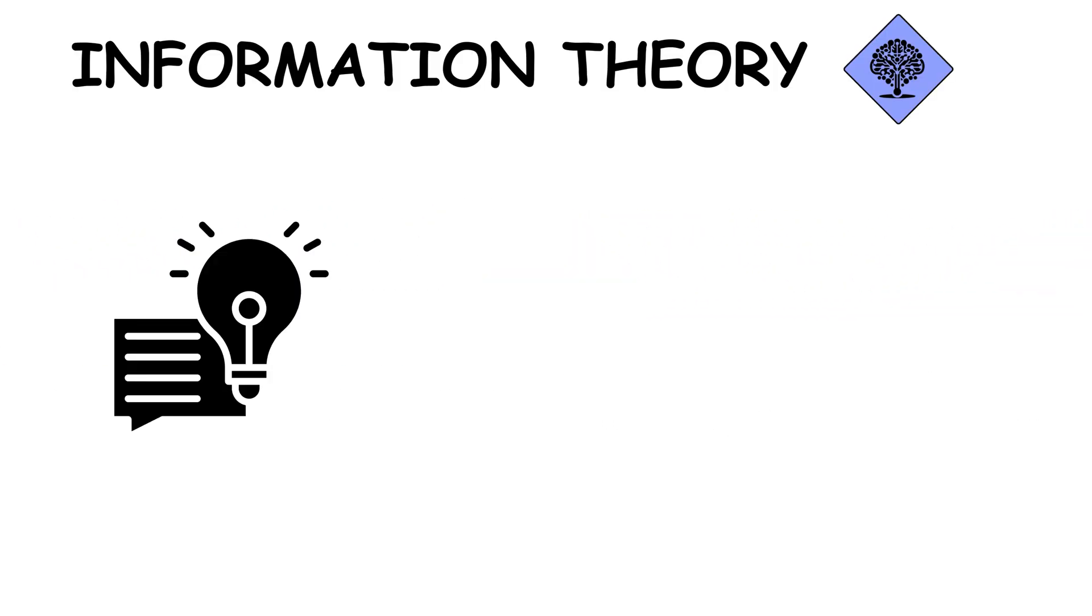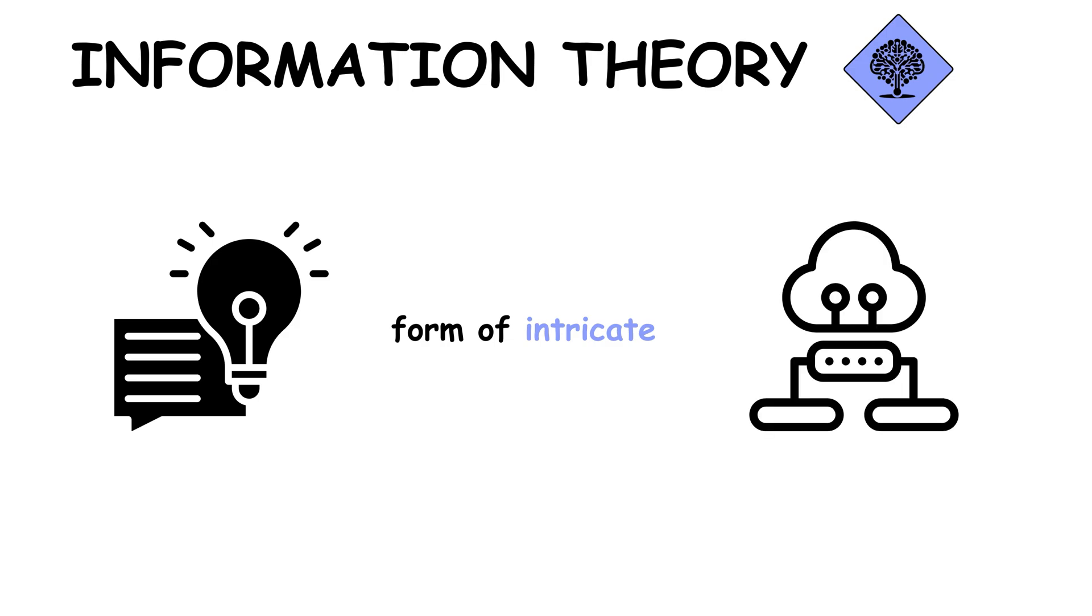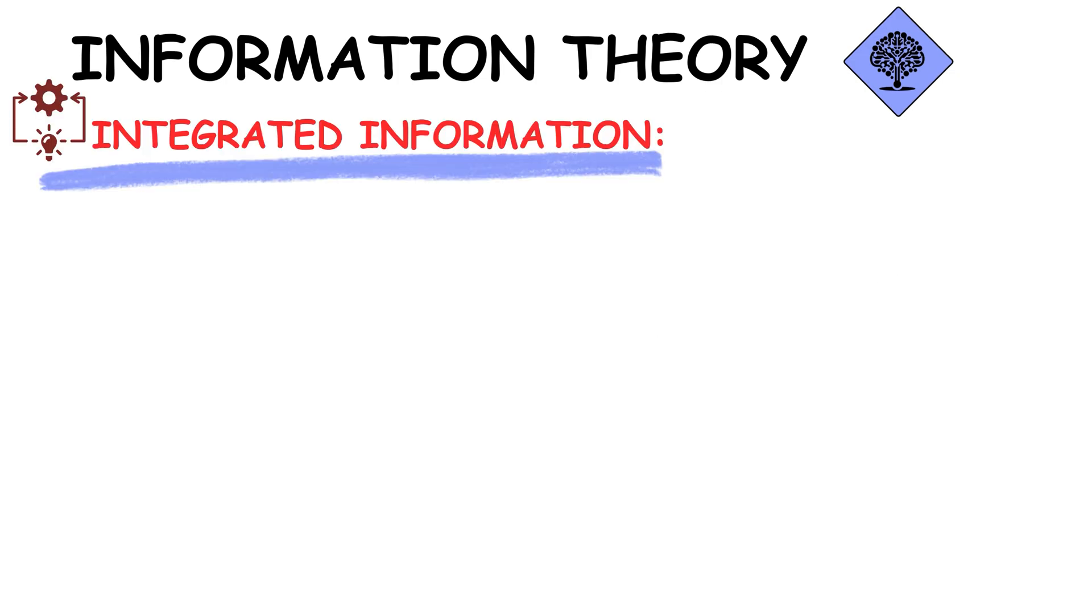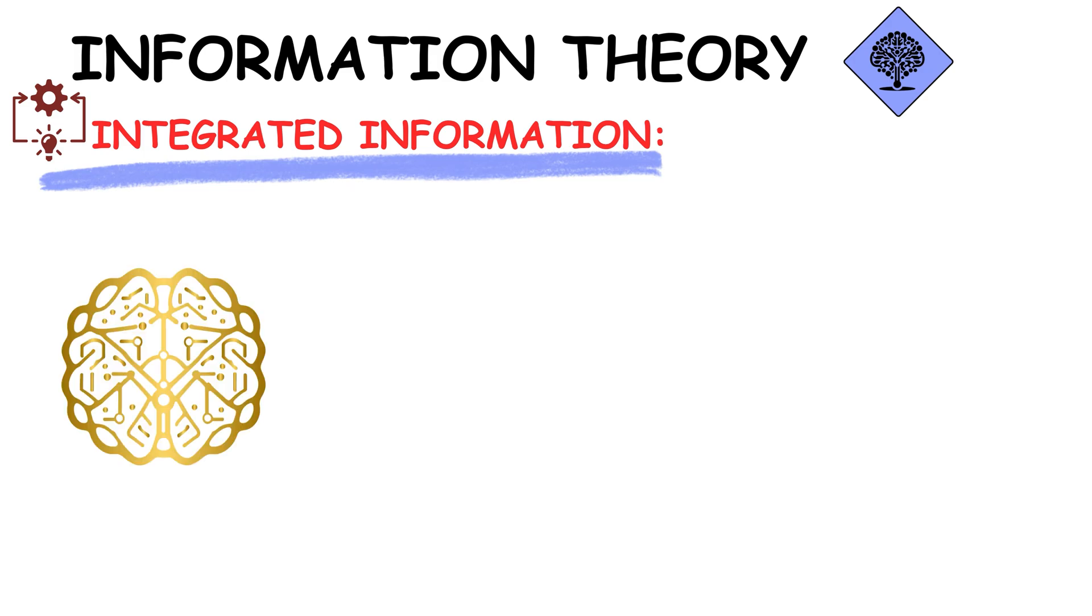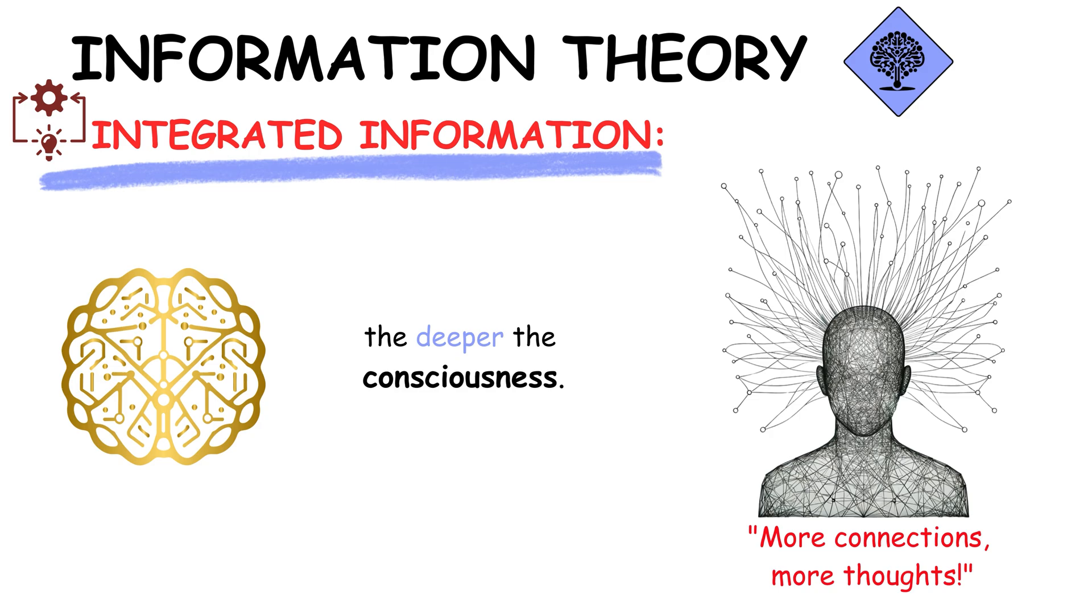Information theory suggests consciousness can be understood as a form of intricate, integrated information processing. Imagine consciousness as a network of information. The more integrated and complex this network, the deeper the consciousness. This theory attempts to quantify consciousness, making it a measurable phenomenon.